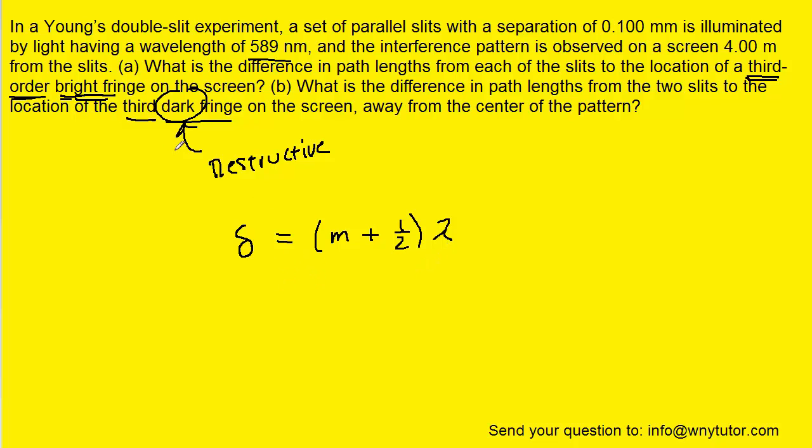Now where this question gets potentially tricky is that it says we're looking for the third dark fringe. So that might lead us to believe that m is going to equal 3. But notice it doesn't say third order, it just says third. And let's try to clarify that distinction.